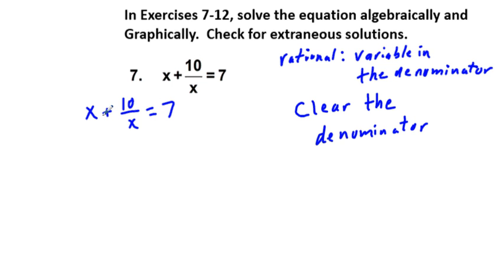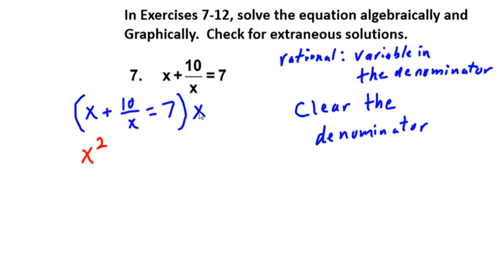What is in our denominator? Well, we have this x below this 10. So to clear out the denominator, we're going to multiply by that denominator, which would be x. If we distribute this x to all terms inside this equation, first on the left side, we're going to have x times x is x squared. x times 10 over x is x times 10 over x, and then equals 7 times x.